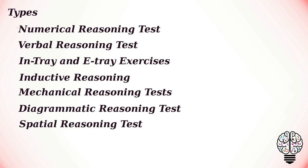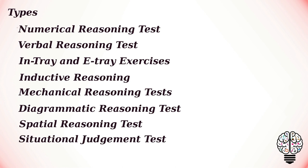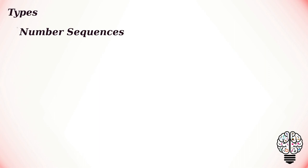Spatial reasoning is essential for solving everyday problems such as using a map and compass, merging into high-speed traffic, and orienting yourself in your environment. Situational judgment tests assess the ability to choose the most appropriate action in workplace situations. Mental arithmetic tests provide information about a candidate's general numerical aptitude and are designed to measure basic numeracy; they can be categorized as a speed test. The number sequence test, also called number series, provides information about a candidate's general ability to logically reason with numbers.